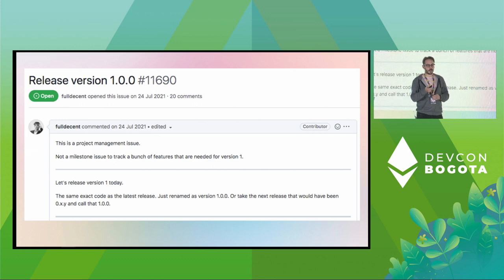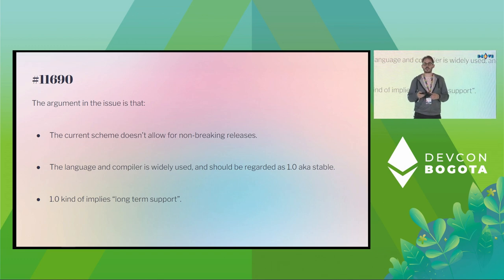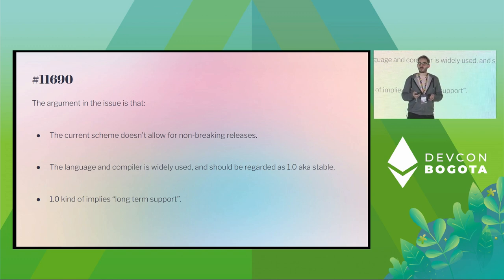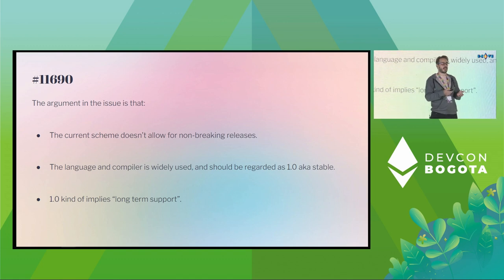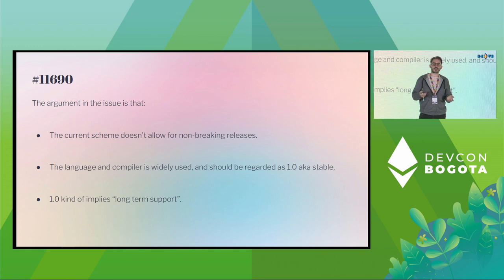Last year there was a big debate around this issue. The author provides a bunch of different reasons why he thinks Solidity should be at 1.0. I summarize three discussion points. The author had the opinion that the current scheme doesn't actually allow breaking releases — in his opinion, every single Solidity release is a breaking release. He also argued that the language is widely used and so it should be 1.0, because that signals it is ready to be used. In fact, when 1.0 was released, we never signalled it was ready for usage, but the nature of blockchain meant people just started using it — and it's always going to be there.